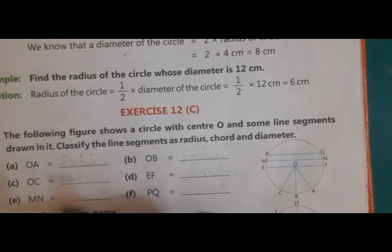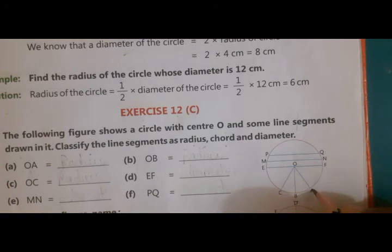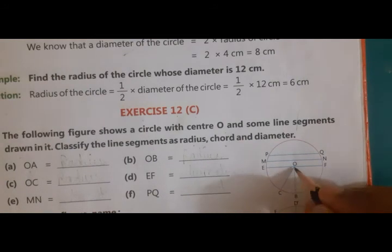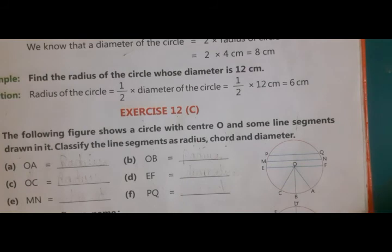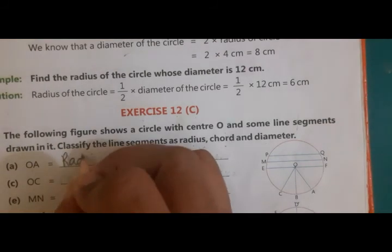The first one is OA. What will it be? Because the line is passing from the center to the circumference, so it is a radius.